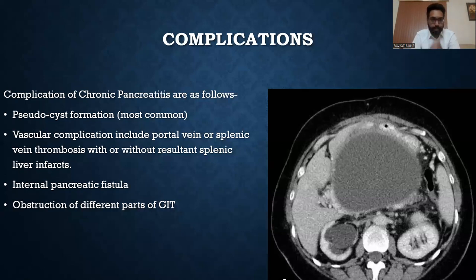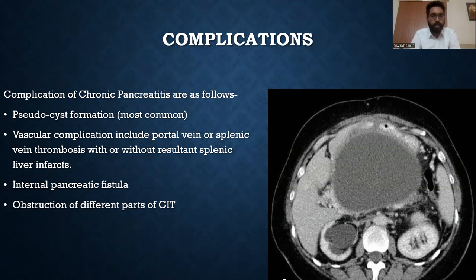The complications of chronic pancreatitis include: pseudocyst formation, which is the most common complication; vascular complications including portal vein or splenic vein thrombosis with or without splenic or liver infarcts; and internal pancreatic fistula with obstruction of different parts of the GI tract. In this CT axial image, we can see pseudocyst formation, and an incidental finding of right hydro-ureteronephrosis is also noted.